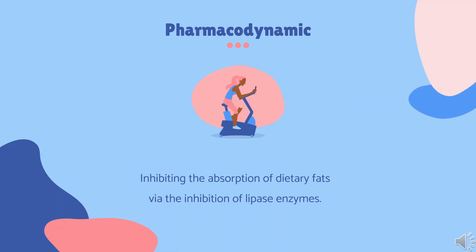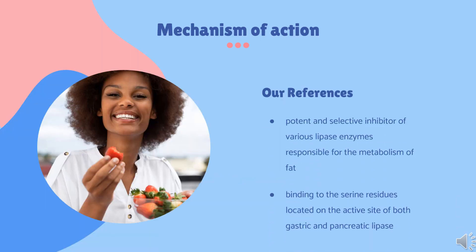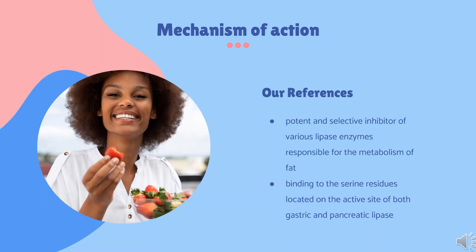Pharmacodynamics. Orlistat helps with weight reduction and maintenance by inhibiting the absorption of dietary fats via the inhibition of lipase enzymes. Mechanism of Action: Orlistat is a potent and selective inhibitor of various lipase enzymes responsible for the metabolism of fat. It acts in the gastrointestinal (GI) tract by covalent binding to the serine residues located on the active site of both gastric and pancreatic lipase. When Orlistat is taken with food containing fat, it partially inhibits the hydrolysis of triglycerides, decreasing absorption of monoglycerides and free fatty acids, contributing to weight maintenance and weight loss.